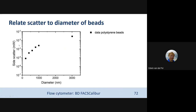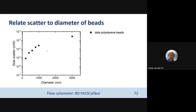The larger the bead, the more side scatter we measured on this flow cytometer. But of course, that is not fully understanding your system — this is just a measurement. You fully understand it if you back up your measurement with a theory, so we used Mie theory to describe these signals.